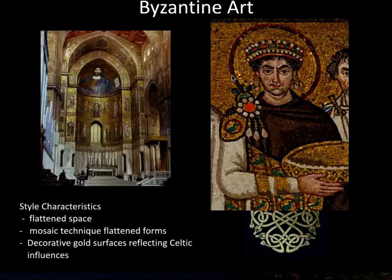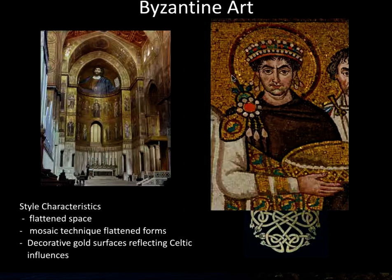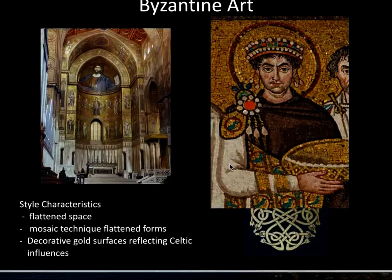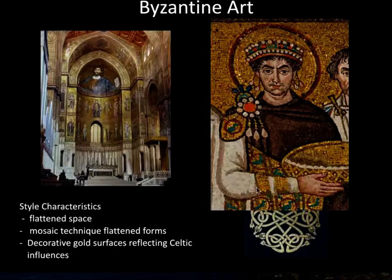There was a great loss of interest in the natural world in both the east and the west, and the king became Christ's representative on earth. The technique found here is what we call mosaic — many little stones glued together to fill in the color and shading of the forms being created. Here you can see the little gold tesserae.